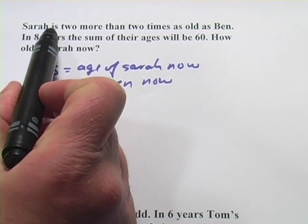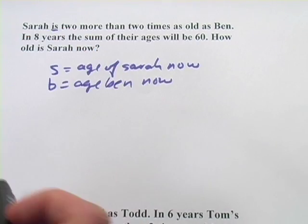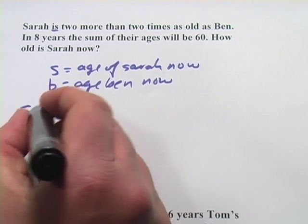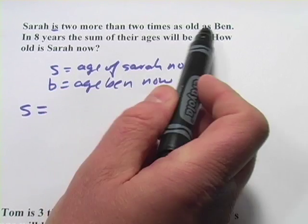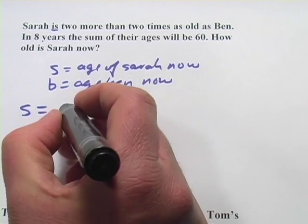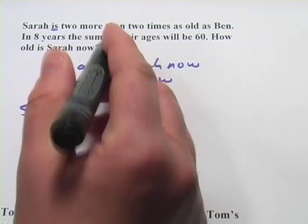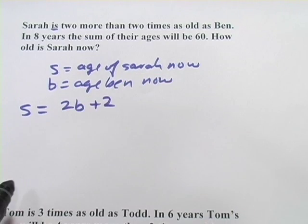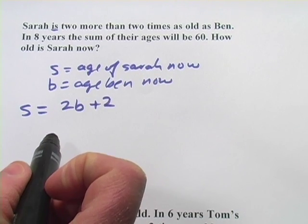So in this first one, it says Sarah is. That is is usually the equal sign. So this is going to be S equals two more than two times as old as Ben. Ben's age is B. Two times as old as Ben is 2B. And two more than that is 2B plus 2. So that's our first equation from that first sentence.